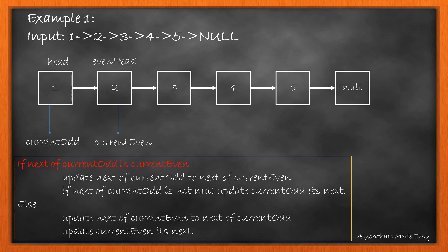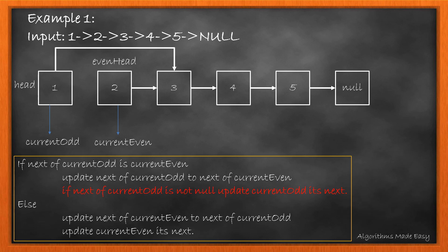We will check if next of currentOdd is equal to currentEven. If it is true, we move forward. First, we have to update next of currentOdd to next of currentEven. Once we do that,